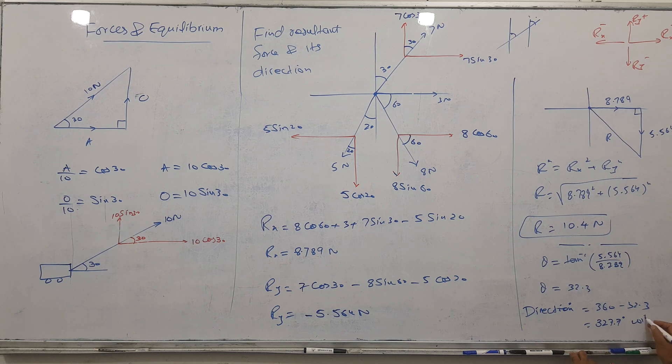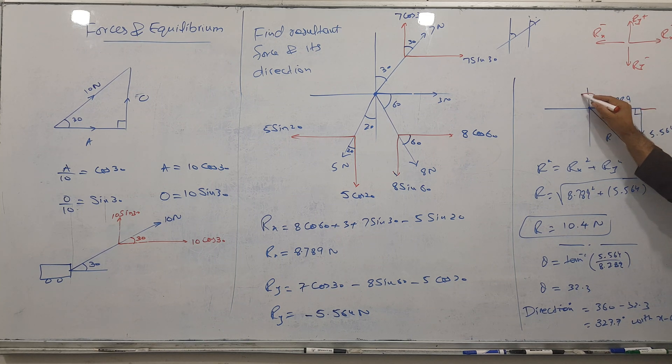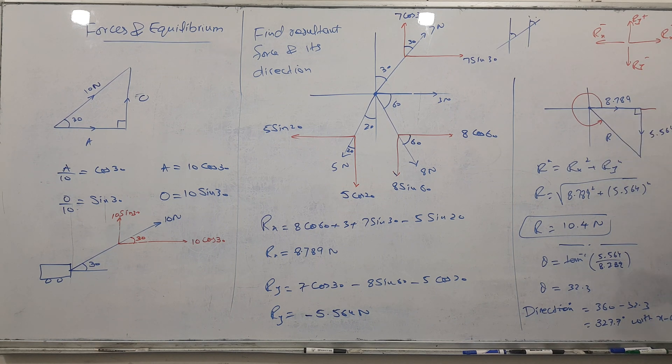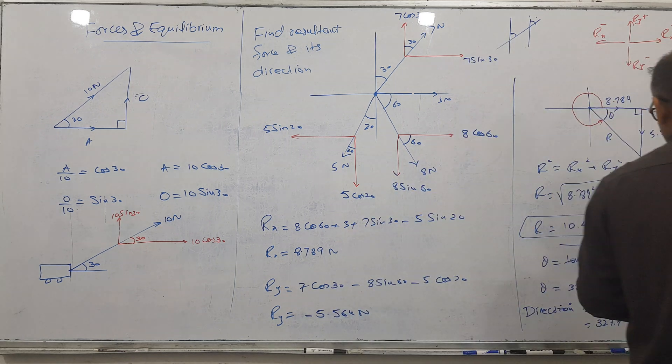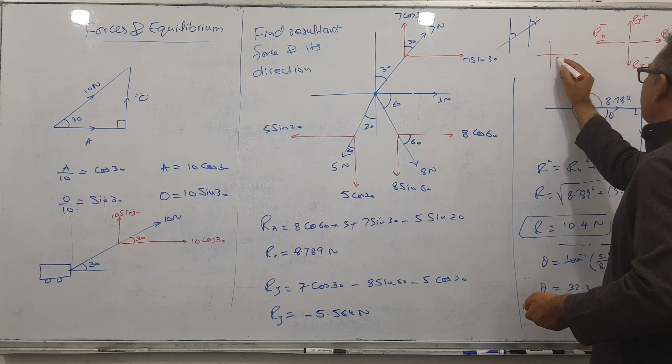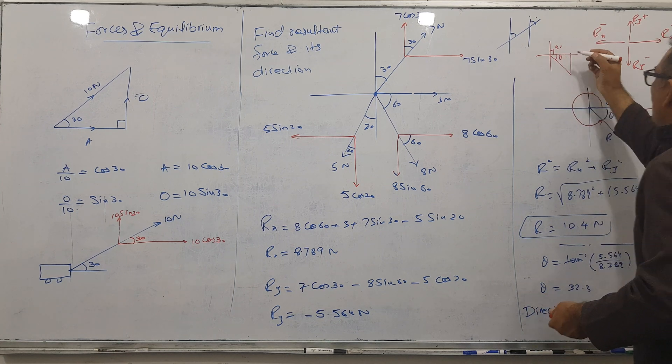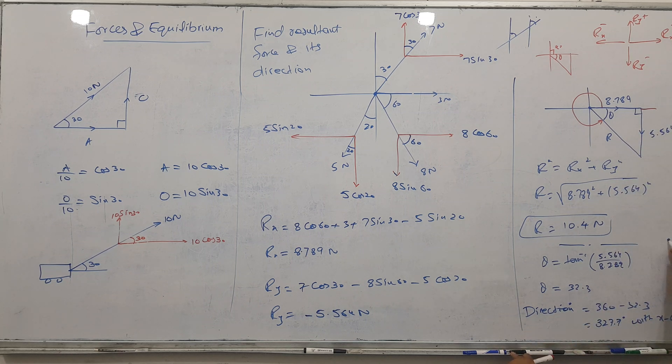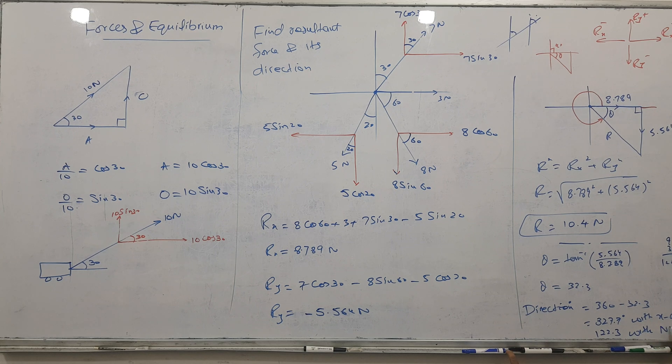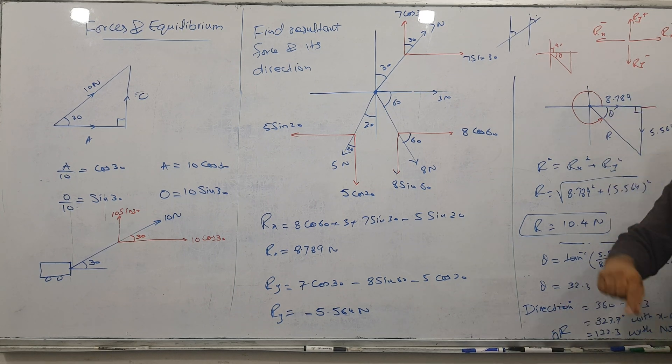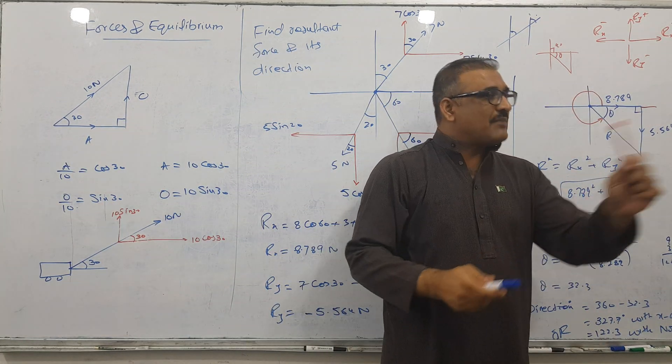327.7 with x-axis. What is direction? Direction always starts from positive x-axis and moves anticlockwise. This theta is not my answer. There are two styles to answer: either you explain bearings with north, or this is 90 degrees so we say 90 plus this one, so 122.3 with north, or anticlockwise with x-axis.